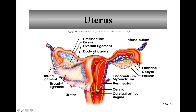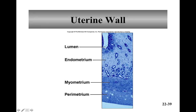The uterus is about seven to ten centimeters long, five centimeters wide, and about two and a half centimeters in diameter — for the non-pregnant woman. The upper part is called the fundus, which is the upper expanded part where the uterine tubes enter. The lower part is called the cervix, which is more narrow. The three layers of the uterine wall are the parametrium, the myometrium, and the endometrium. The endometrium and myometrium undergo a lot of changes over a monthly cycle, and the endometrium gets sloughed off.